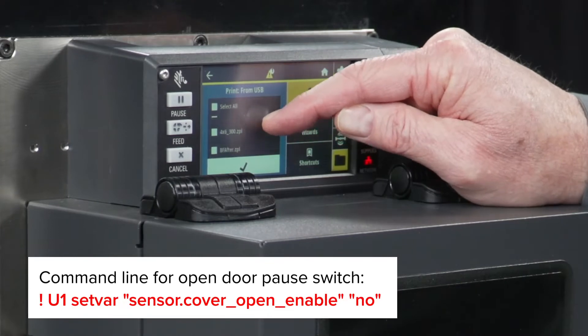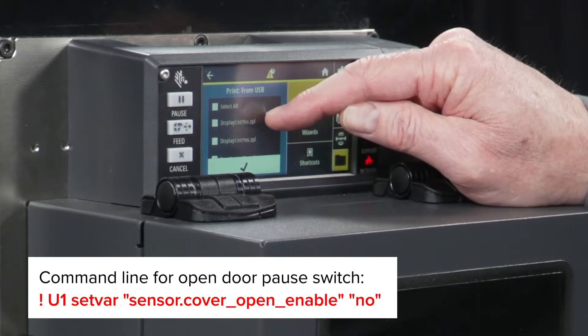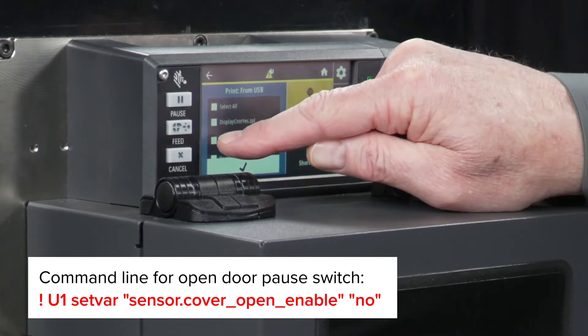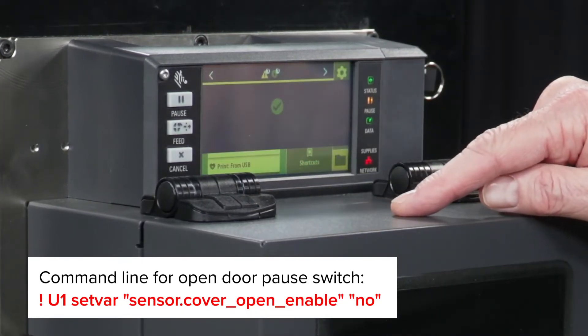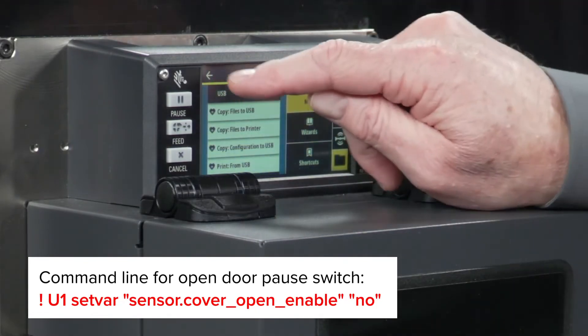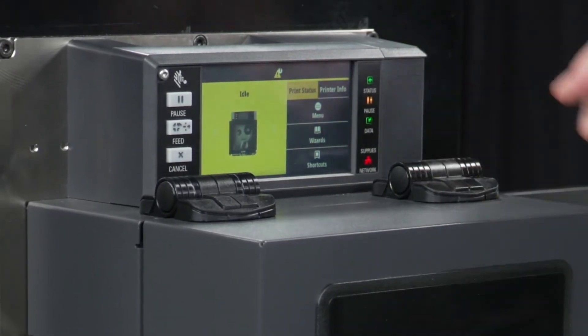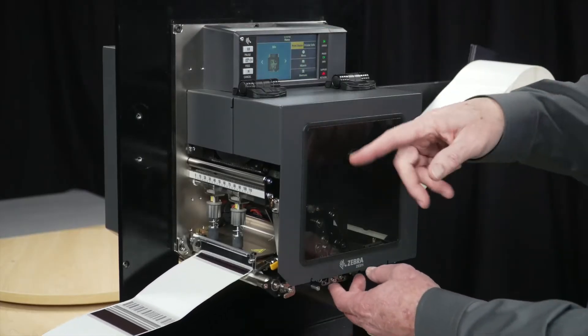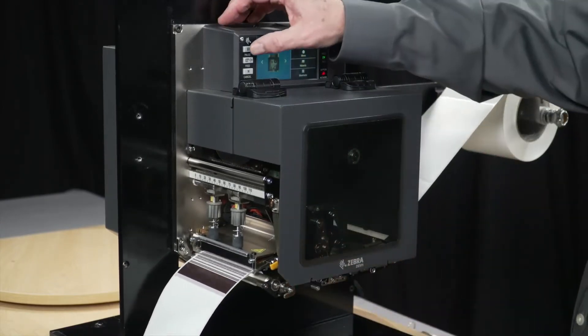And I have a file on here called Door Sensor No, I believe. Door Sensor No. I'm going to select that file and say go to the printer. So now that that's done, I can open and close my door without the printer pausing. So when I take this off pause, you can see that it goes when I open and close the door, I'm not pausing.